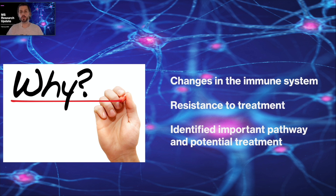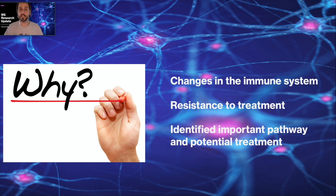Furthermore, without going into the specifics of the actual pathway they identified, they found a pathway in these mice that seemed to be important in terms of how this early life trauma may be interacting with the disease. And importantly, they found a way that they could modify this pathway in a potential therapeutic approach.